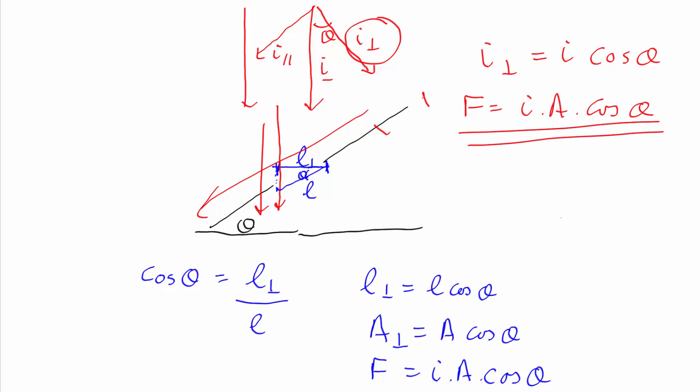So as you'd expect you get the same answer either way, and in real problems you can again choose whichever way makes most sense to you. You can replace your true slanty surface with a smaller perpendicular surface, or you can replace your true slanty radiation with a smaller perpendicular radiation. In each case you get an I A cos theta result.